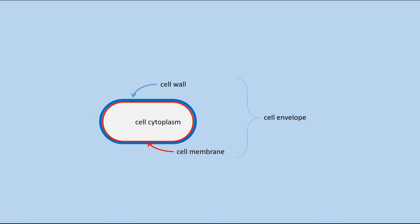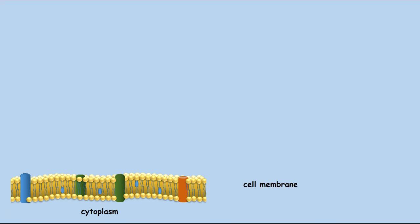Like that of eukaryotic cells, the bacterial cell membrane is a semi-permeable barrier that determines what can enter and what cannot, as well as what can exit and what remains inside the cell. Lastly, it defines the cellular limits. Its major components in bacteria are the phospholipids, proteins, and the hopanoids.